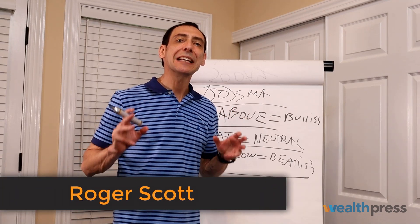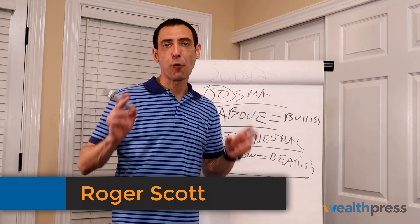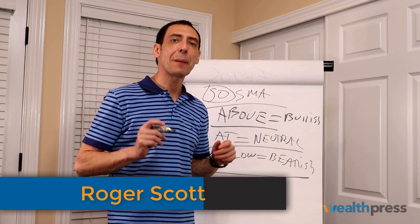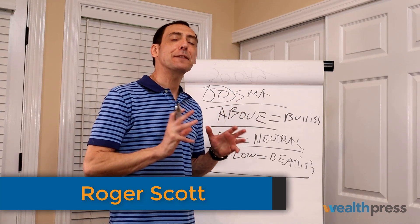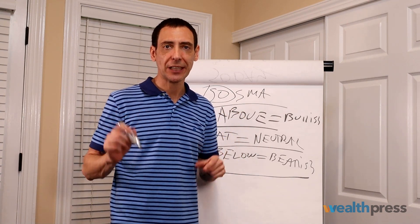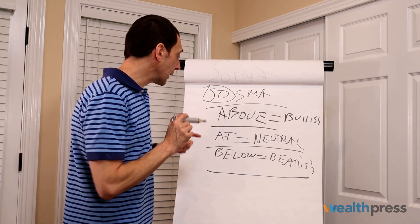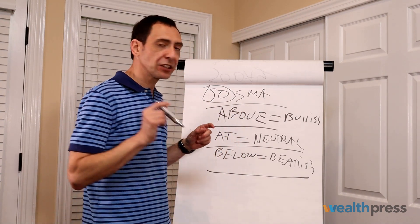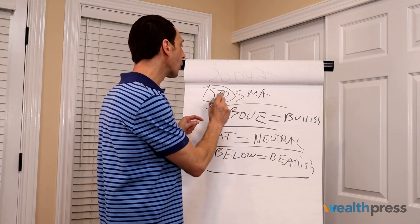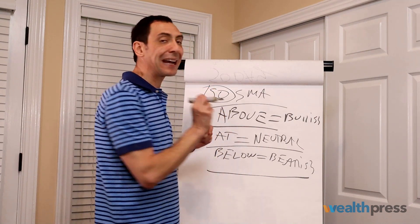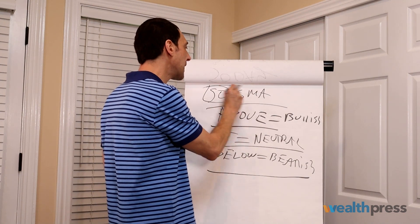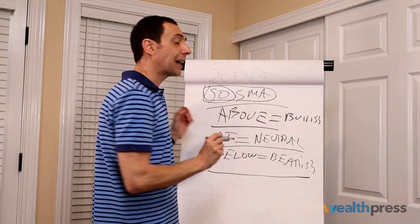Hey folks, this is the second video in a four-part video series. I'm talking about different types of sectors to trade during different types of market cycles. In the first video, I explained that we're going to deal with three types of market cycles, and the gauge is going to be the 50-day simple moving average.